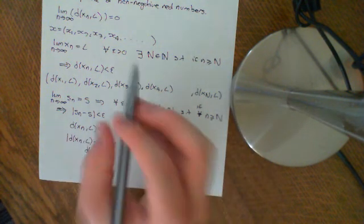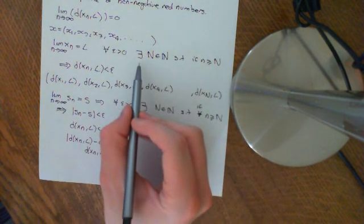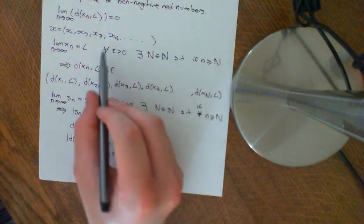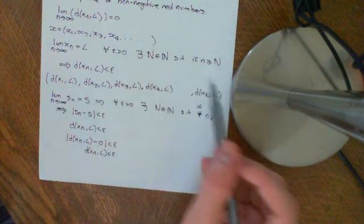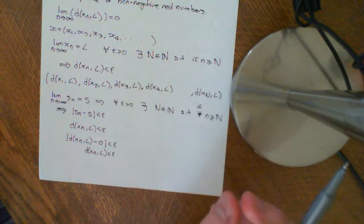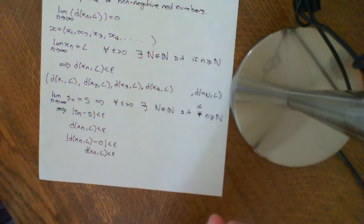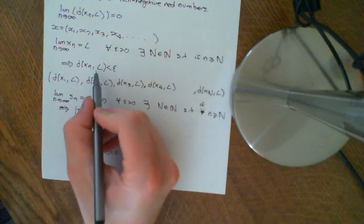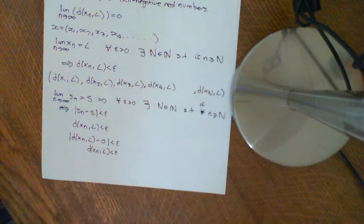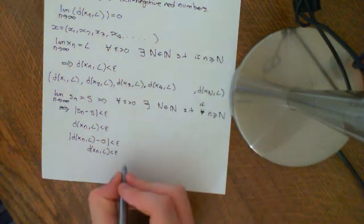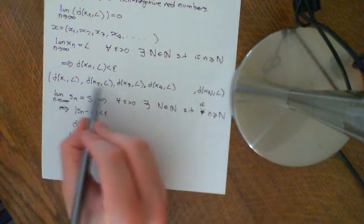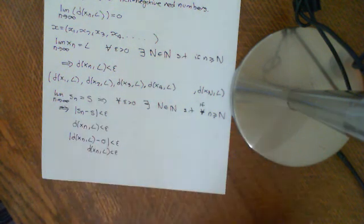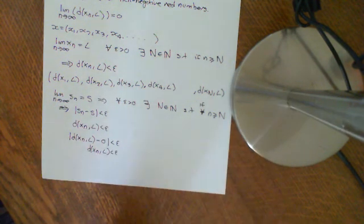So if the original definition holds — that for whatever epsilon you give me, I can find a point in the sequence after which all subsequent points are within that distance of limit L — then it's equivalent to saying that this sequence of distances between each term and L is converging to zero. That completes the proof in that direction.